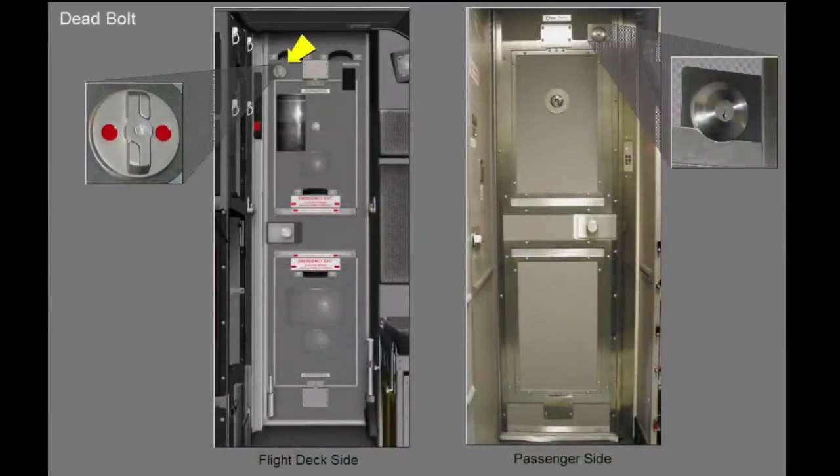A mechanically operated deadbolt provides additional security. The deadbolt is primarily for ground use only. On the flight deck side, you operate the deadbolt with the split locking lever. On the passenger side, you operate the deadbolt with the key.